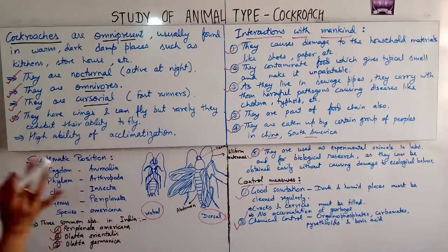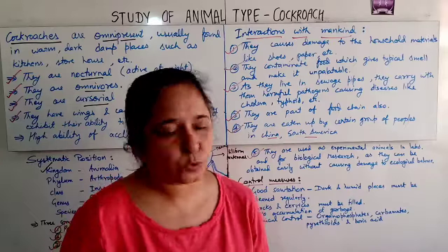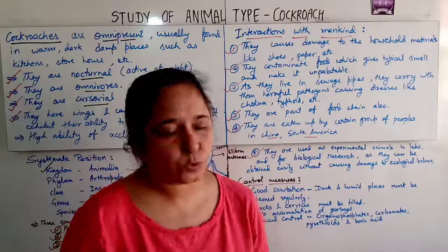For this chapter, only this much content remains, as the rest has been deleted for this year. The important topics are: the systematic position, general characteristics of the cockroach, and the names of the species — these are very important as exam questions are often asked on them. Thank you.